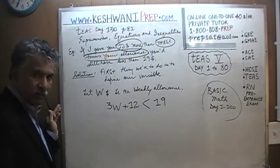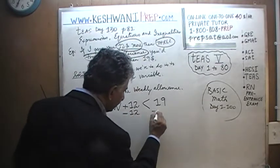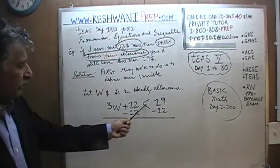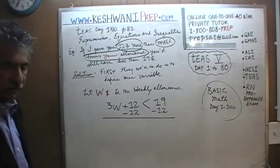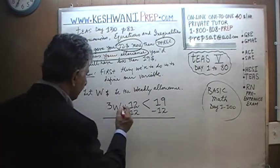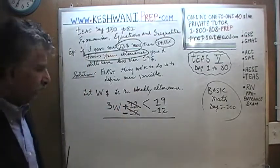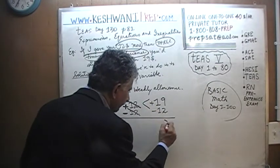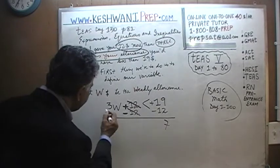To solve, we need to isolate w. The very first thing we do is get rid of the 12 by subtracting 12 from both sides — this is no different than solving an equation. The positive 12 and negative 12 cancel each other out, and on the right side, 19 minus 12 gives us 7. We are left with 3w on the left side, and the inequality sign stays.